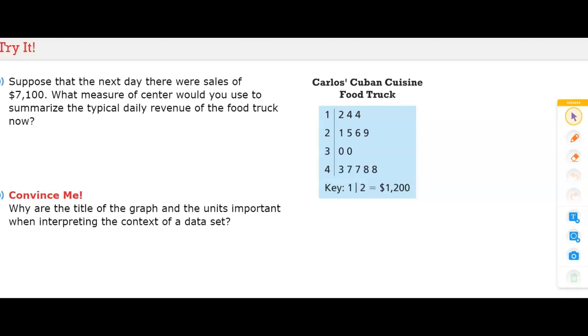I want to do a real quick review of what this stem and leaf plot data is. They give us a key right here. This key is that the 1 represents 1,000 and the 2 represents the 100s. So, that's why it's showing you that the key is what it looks like that is 1,200. I'm going to list all the data just so we're all on the same page on how to read a stem and leaf plot.